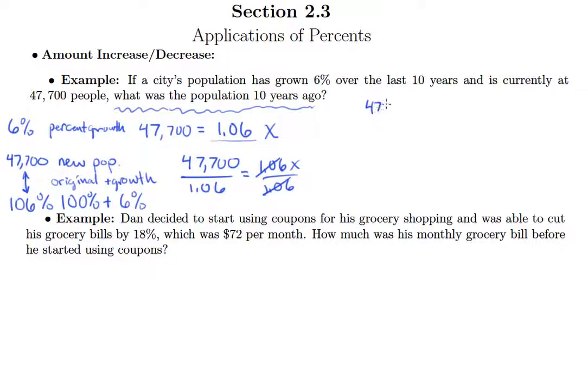All right, so that's 47,700 divided by 1.06. Of course, I'm going to need to move that decimal point to the right a little bit in both of these numbers. So what we end up with here is 4,770,000 divided by 106.